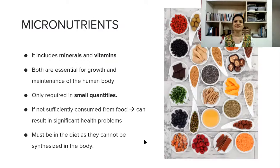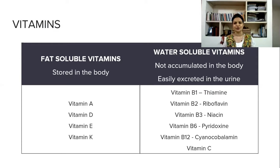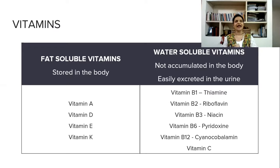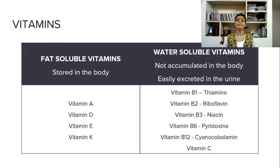So now what we are seeing in the next slide is what is a vitamin. The first micronutrient we are covering is vitamins. Vitamins are divided into fat soluble vitamins and water soluble vitamins. Fat soluble vitamins are vitamin A, vitamin D, vitamin E, and vitamin K. They are easily dissolved in fats or oils. That's why they are called fat soluble.